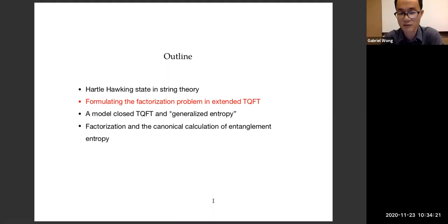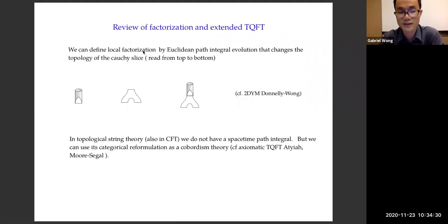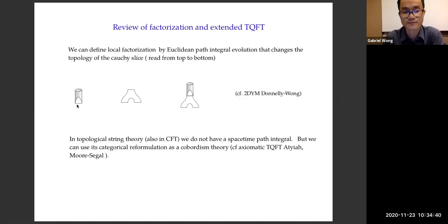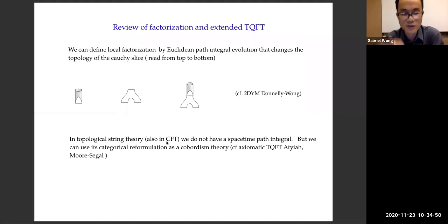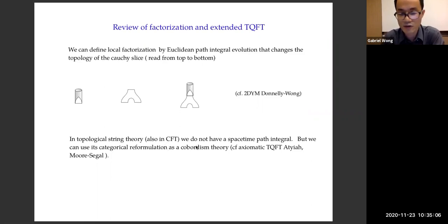Now I'll describe the factorization problem in the TQFT formalism to show the self-consistency of this definition. Normally we could define local factorization by using a spacetime Euclidean path integral, doing an evolution that changes the topology of the Cauchy slice — starting with a circle and evolving it into an interval, or splitting an interval into two intervals. However, in topological string theory we don't have a spacetime path integral, and the idea of trying to do string field theory and access off-shell configurations is intimidating. What we do instead is use a categorical reformulation of the path integral as a cobordism theory.